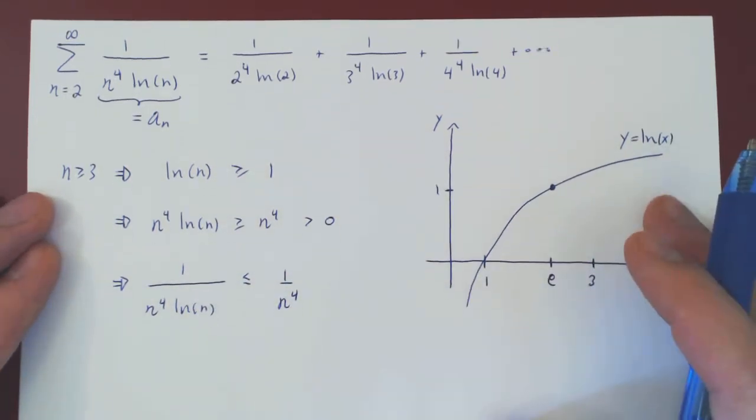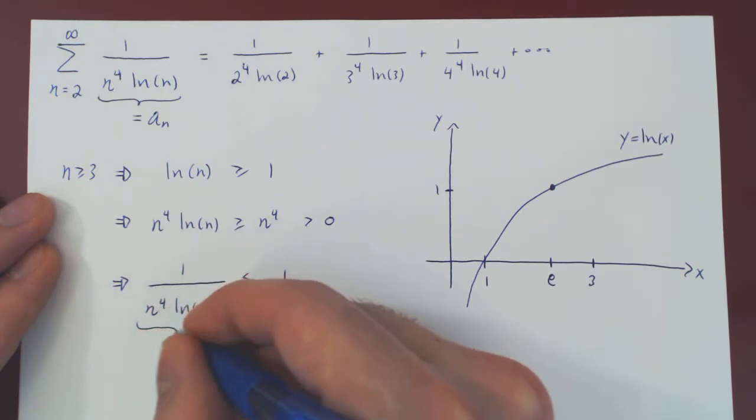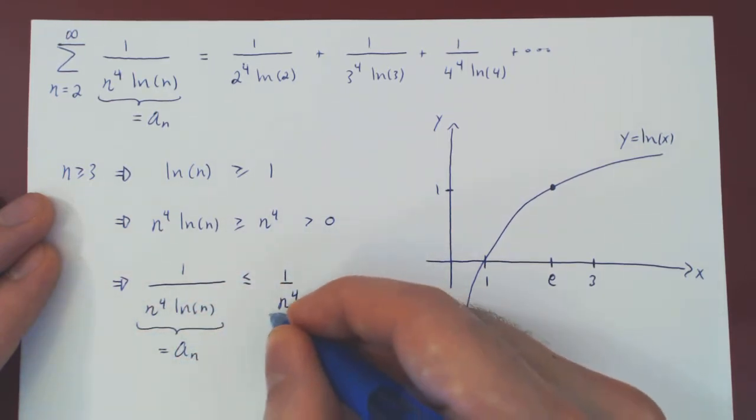And now, we have just compared the original sequence with a much simpler sequence, which is now our bn.